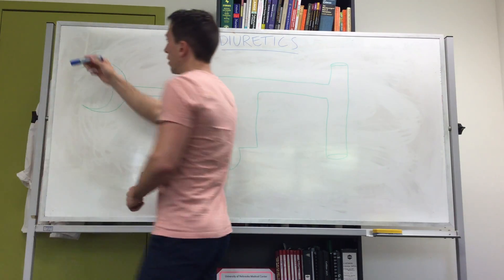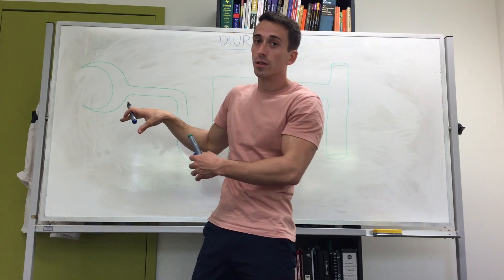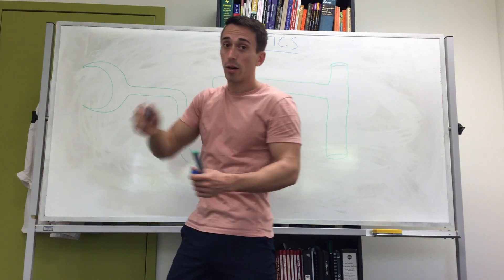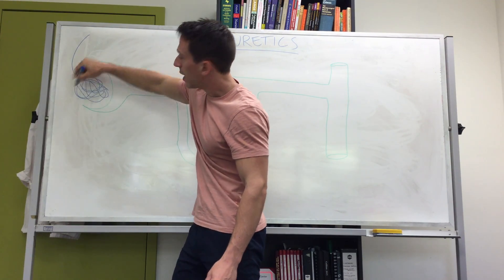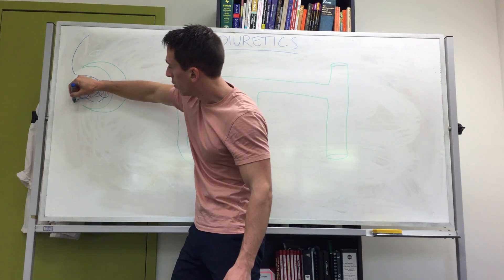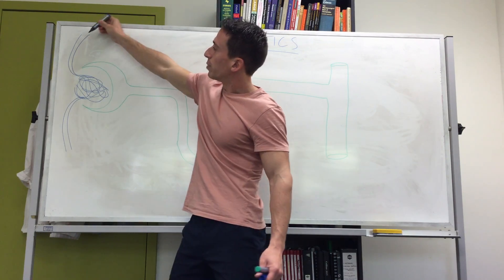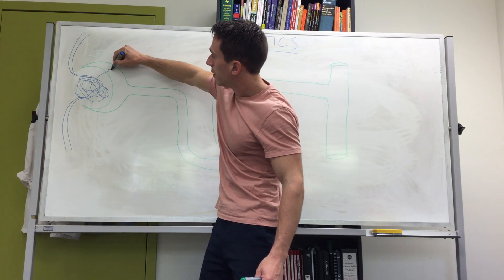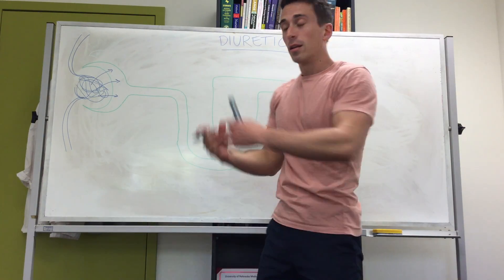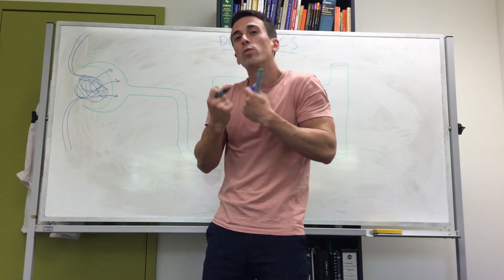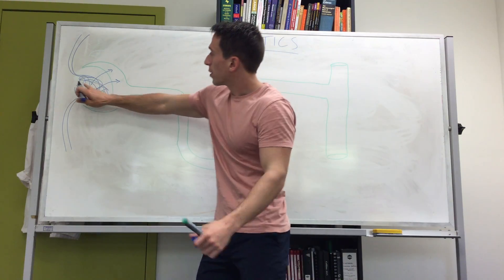Each kidney has one million nephrons, and there are capillaries present — here in the glomerular capsule this looks like a ball of yarn, which is called the glomerulus. Blood comes in, and it gets filtered into the glomerular capsule — not just the plasma but also what's within that plasma: the water, electrolytes, wastes, and so forth.